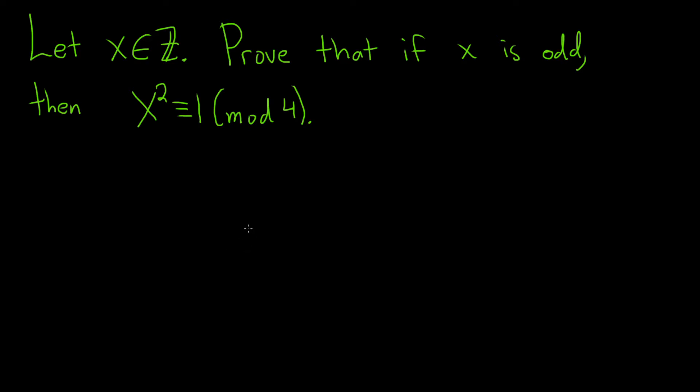In this problem we're going to prove that if we have an odd integer, then x squared is congruent to 1 modulo 4.